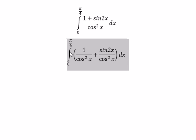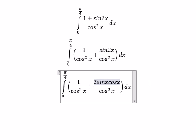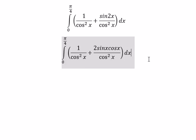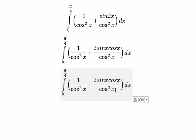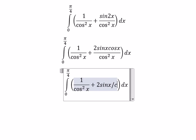About sine 2x, we got about 2 sine x cosine x divide cosine x square. You got about 2 sine x over cosine x.